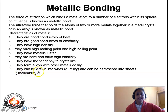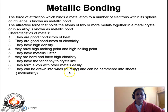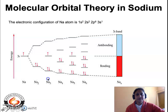Metals can be drawn into wires or they can be hammered into sheets. The property of metals being drawn into wires is known as ductility, and the property of metals being hammered into sheets is known as malleability.